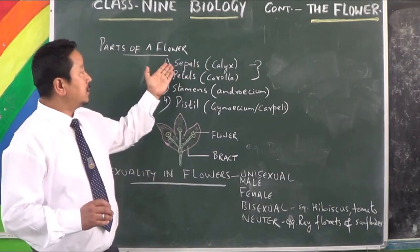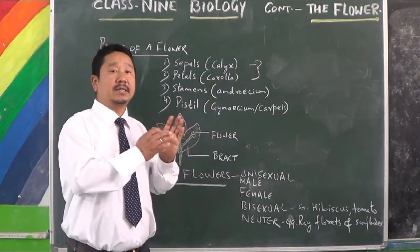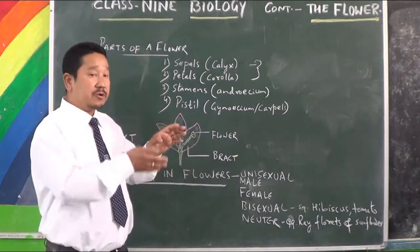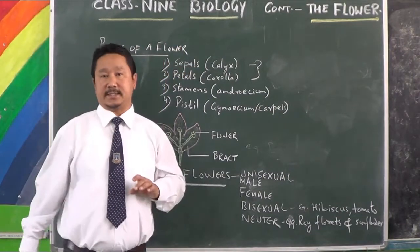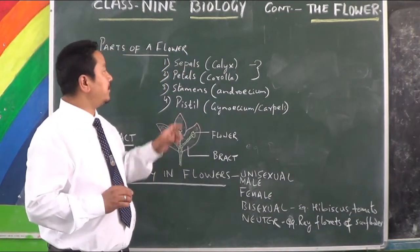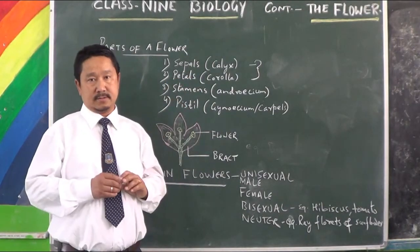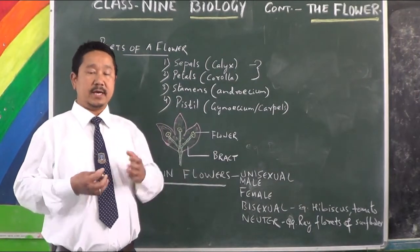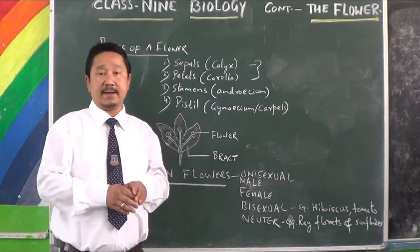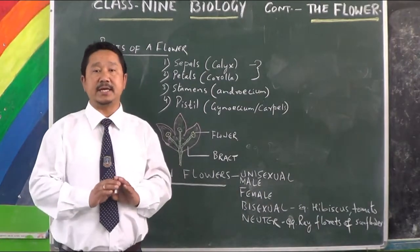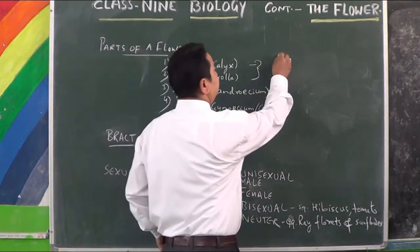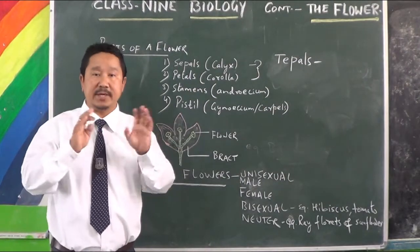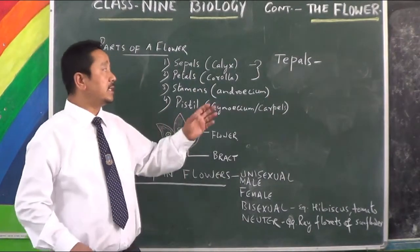Sepals and petals — what kind of structures are they? We discussed this in the last class. Now what you have to understand is this: in some cases, in some flowers, the sepals and petals look alike. They are similar and cannot be differentiated. Such structures are called tepals.